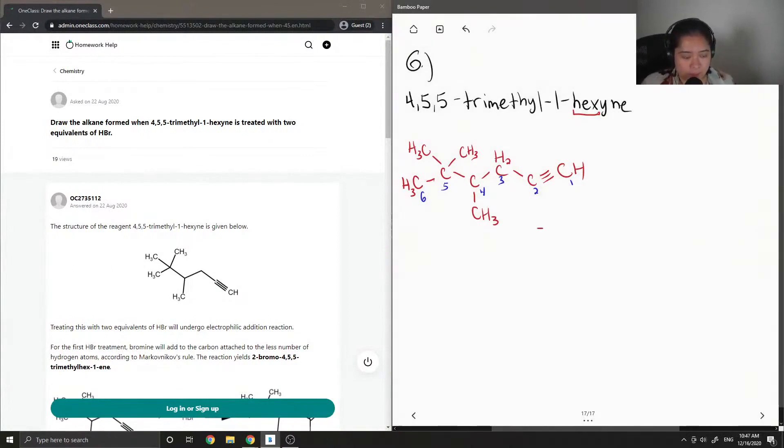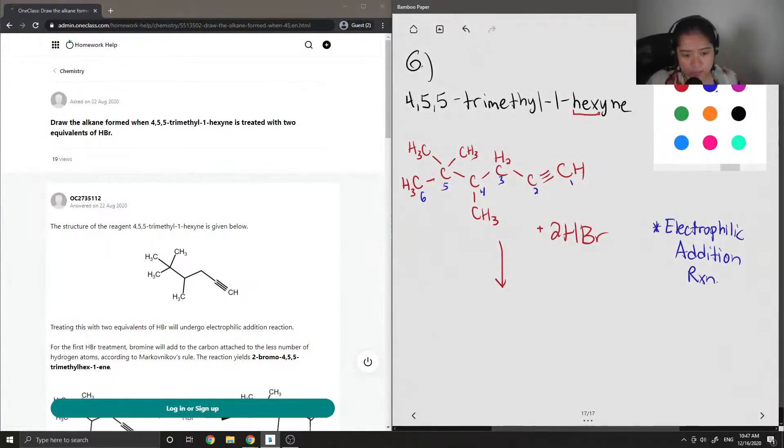In this question, 4,5,5-trimethyl-1-hexyne is treated with two equivalents of HBr. So what happens is an electrophilic addition reaction. Since there are two equivalents of HBr, that means two bromine groups will be added to the triple bond.